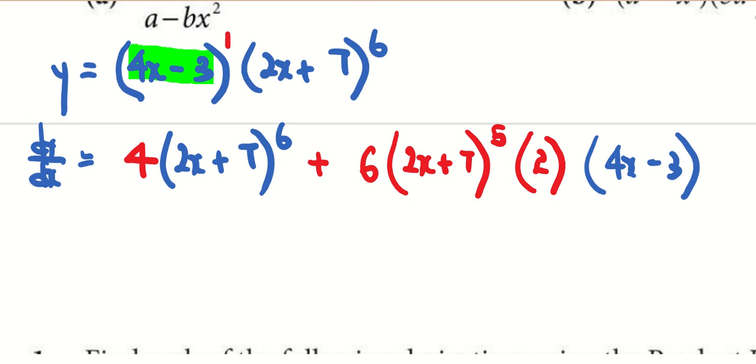So after we have performed the two step for product rule, take note, check for common terms. You can clearly see 2x plus 7 is the common term. So we need to factorize it. Take out the one with the smaller power like what you all have just told me. So I'm going to do that. The smaller power is power five. So I'm going to take out the one with the smaller power.